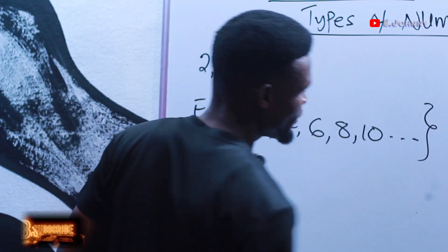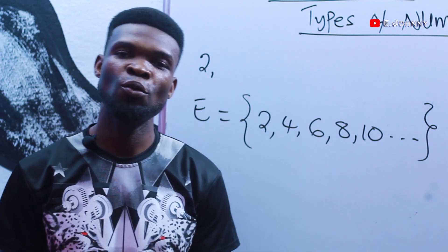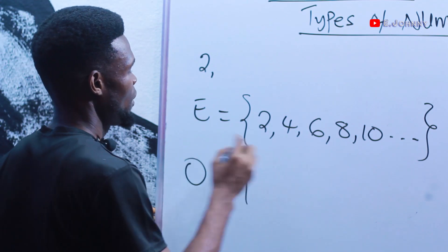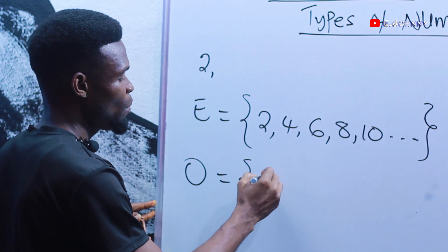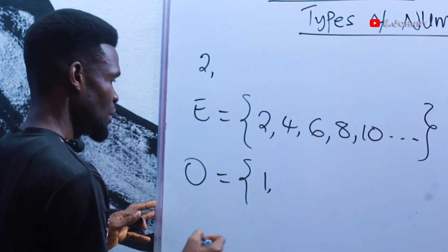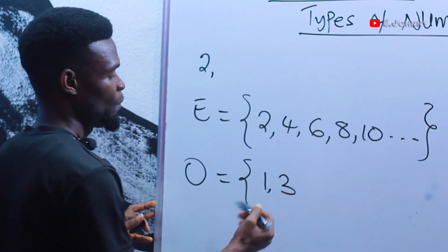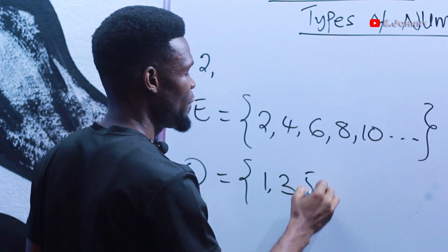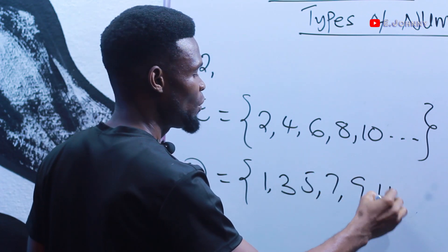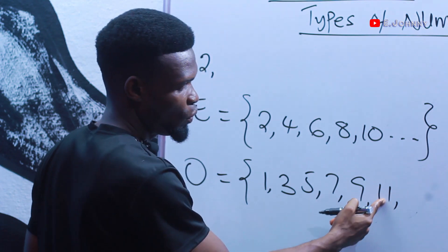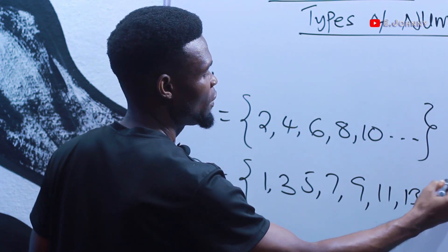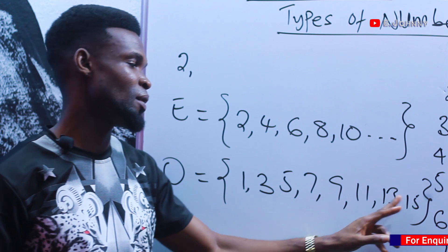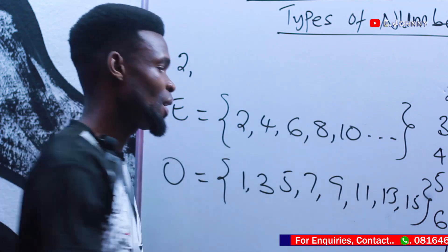Whereas odd numbers are numbers that when divided by 2 there is always a remainder. For instance, the first odd number is 1, the next is 3 — because these numbers when divided by 2 there is always a remainder. The next one is 5, next 7, 9, 11, 13, 15, and so on and so forth. So these are odd numbers: 1, 3, 5, 7, 9, 11, 13, 15, and so on.